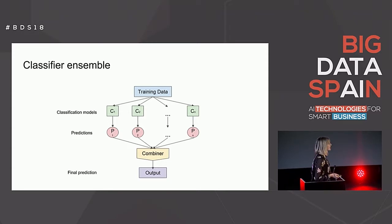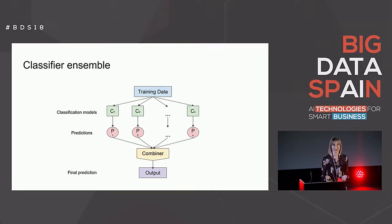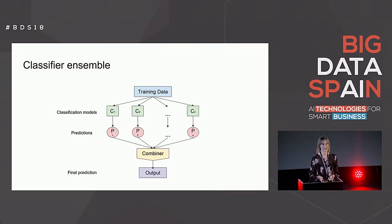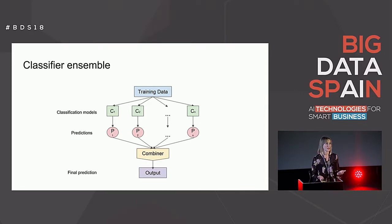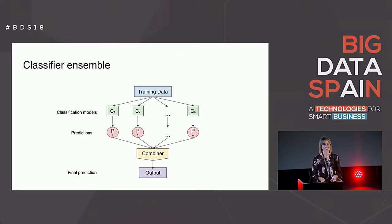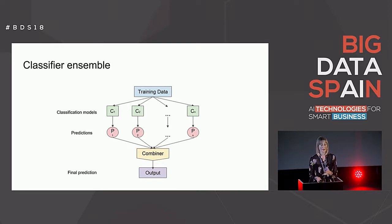So now we can see a scheme of a typical ensemble for classification. Ensembles were born in classification, so they are usually used in classification. We have our training data, and then we have different classification models. These classification models can be different because they train on different data, because the classifiers are different, or because the parameters are different. They have to be different, because it doesn't make sense to train the same model over and over. Since the classification models are different, the predictions are also different. So we have different predictions that need to be combined somehow to obtain our final prediction.